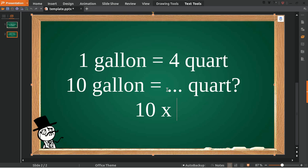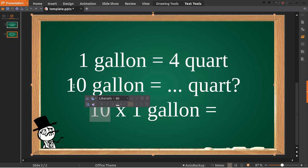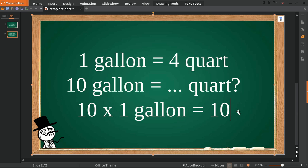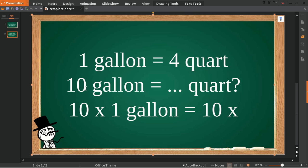Okay, and then equal sign and 4 quarts. Don't forget, we put the 10 on the left, we must put the 10 on the right as well, okay? Because this is the question, this is the multiply factor.